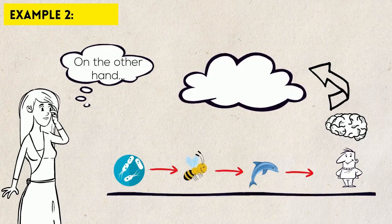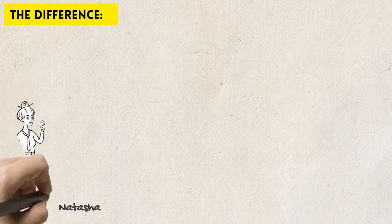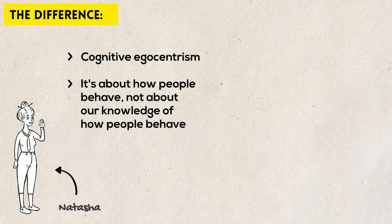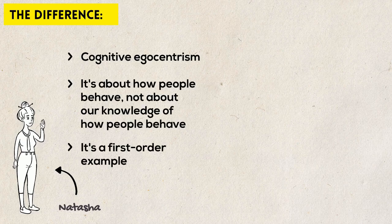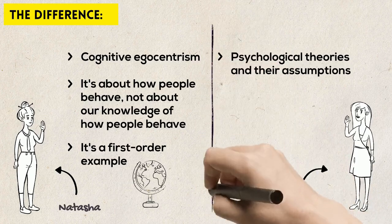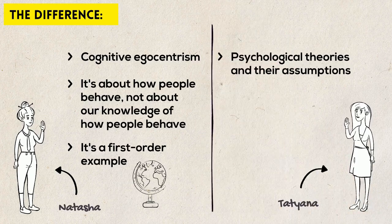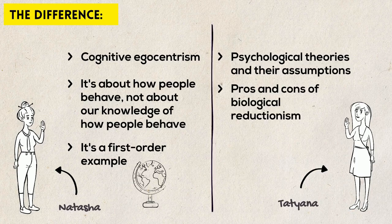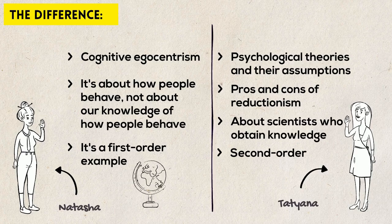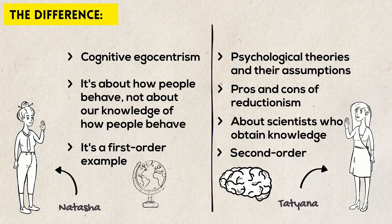Can you feel the difference between these two examples? Natasha's example is about cognitive egocentrism — a characteristic of human thinking and behavior. It's about how people behave, not about our knowledge about how people behave. It's first-order, not second-order. It's about the world, not about our knowledge. Tatiana's example, on the other hand, is about psychological theories and their assumptions. Some theories, such as sociobiology, assume that biological factors are sufficient for explaining all human behavior; some assume they are not. Tatiana discussed the pros and cons of each approach — it's about how scientists create theories about human thinking and behavior, but not about human thinking and behavior as such. It is a second-order example. Tatiana's example is suitable for a TOK essay, whereas Natasha's is not so much.